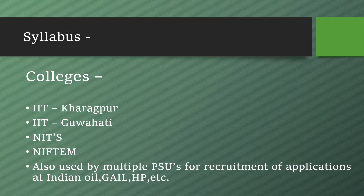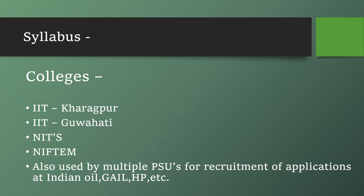Regarding the syllabus, GATE generally covers all the topics studied in an ordinary graduation program. For General Aptitude you need a grip on probability, reasoning, pictorial representation, and pattern finding. For Mathematics or Chemistry, topics remain standard — integration, differentiation, logarithms, or polymers, organic, physical, and inorganic chemistry. For Food Technology specifically, you need a strong grip on core subjects like food preservation, food processing, and food plant sanitation.